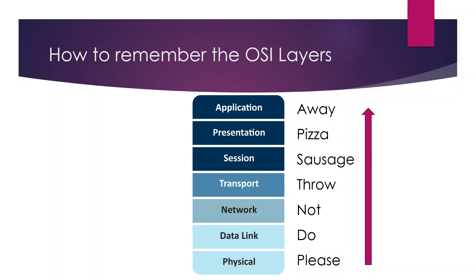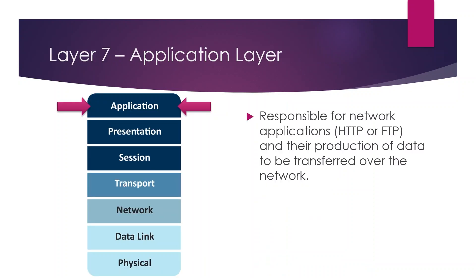The first layer we'll cover is the Application layer, layer seven. This is responsible for network applications such as HTTP, FTP, and SMTP, and the production of data to be transferred over the network. For example, when you open a browser and navigate to a web page, that happens at the Application layer.